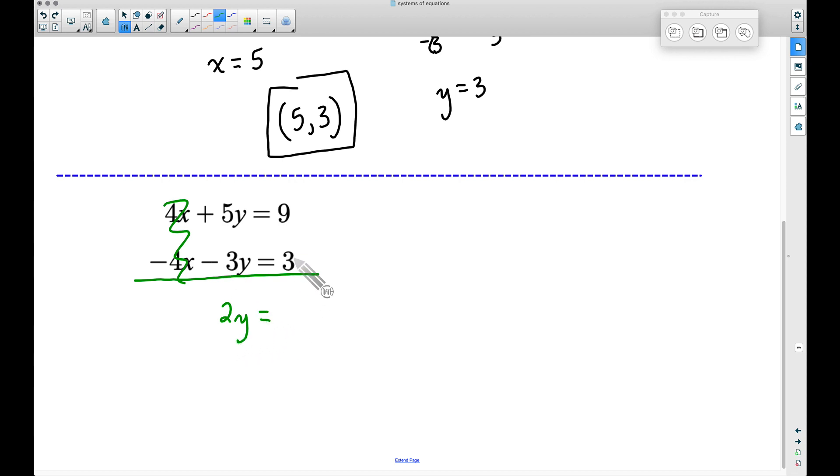Look how fast we can solve for y in this equation. When we divide both sides by 2, we get y equals 6. So let's repeat this process. Take either one of your equations—I'm going to take the first one again. We have 4x plus 5y. I want to take 5 times 6 because we got a y value of 6, and this equals 9.